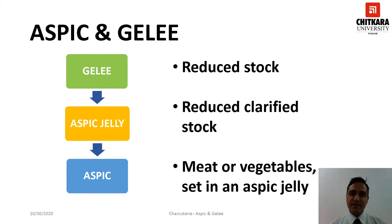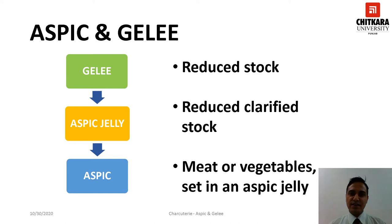A jelly in culinary terms is a gelatinous meat or fish stock. A jelly becomes an aspic jelly when it is clarified. The word aspic is used to refer to a combination of cold meat, fish, vegetables or eggs, which are set in an aspic jelly in a decorative mould.